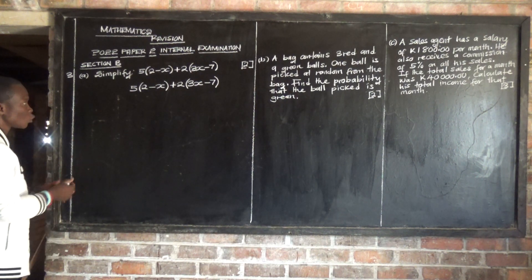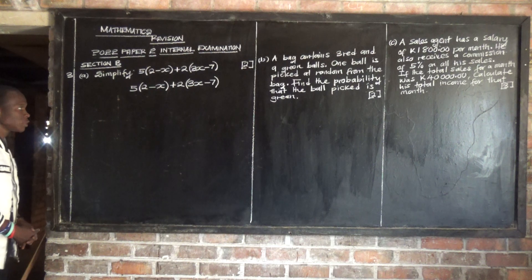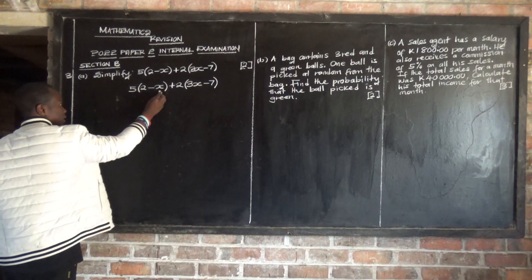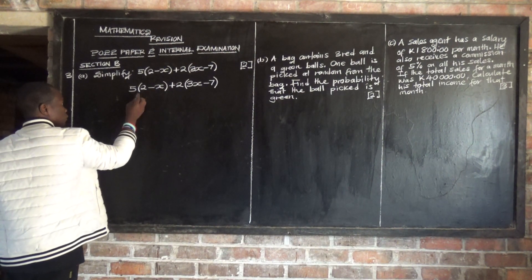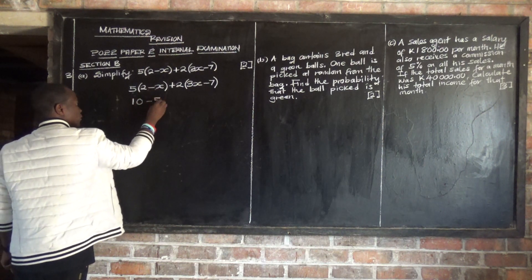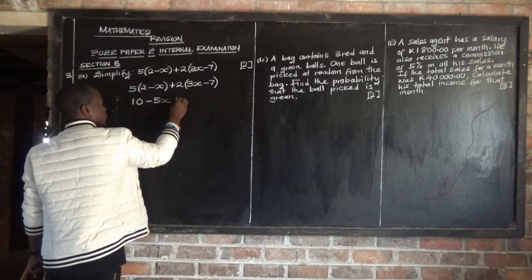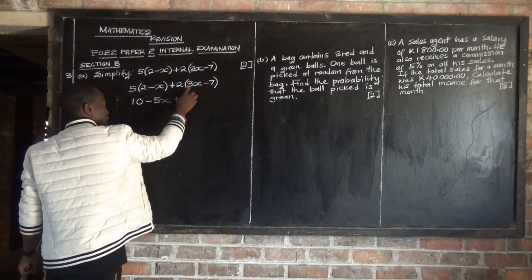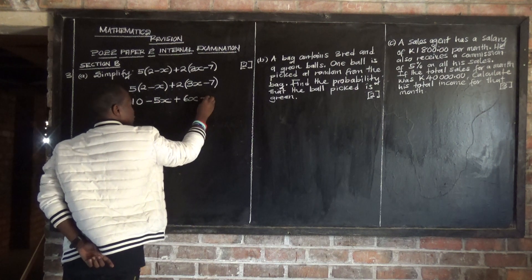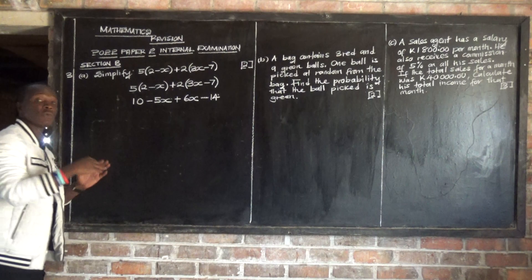The first thing we need to do is get rid of the bracket sign. We need to multiply what is outside by what is inside. So, 5 times 2 gives 10. 5 times negative x gives negative 5x. Then positive times positive is positive: 2 times 3x gives 6x. Positive times negative is negative: 2 times 7 gives 14. So we can now remove the bracket sign.